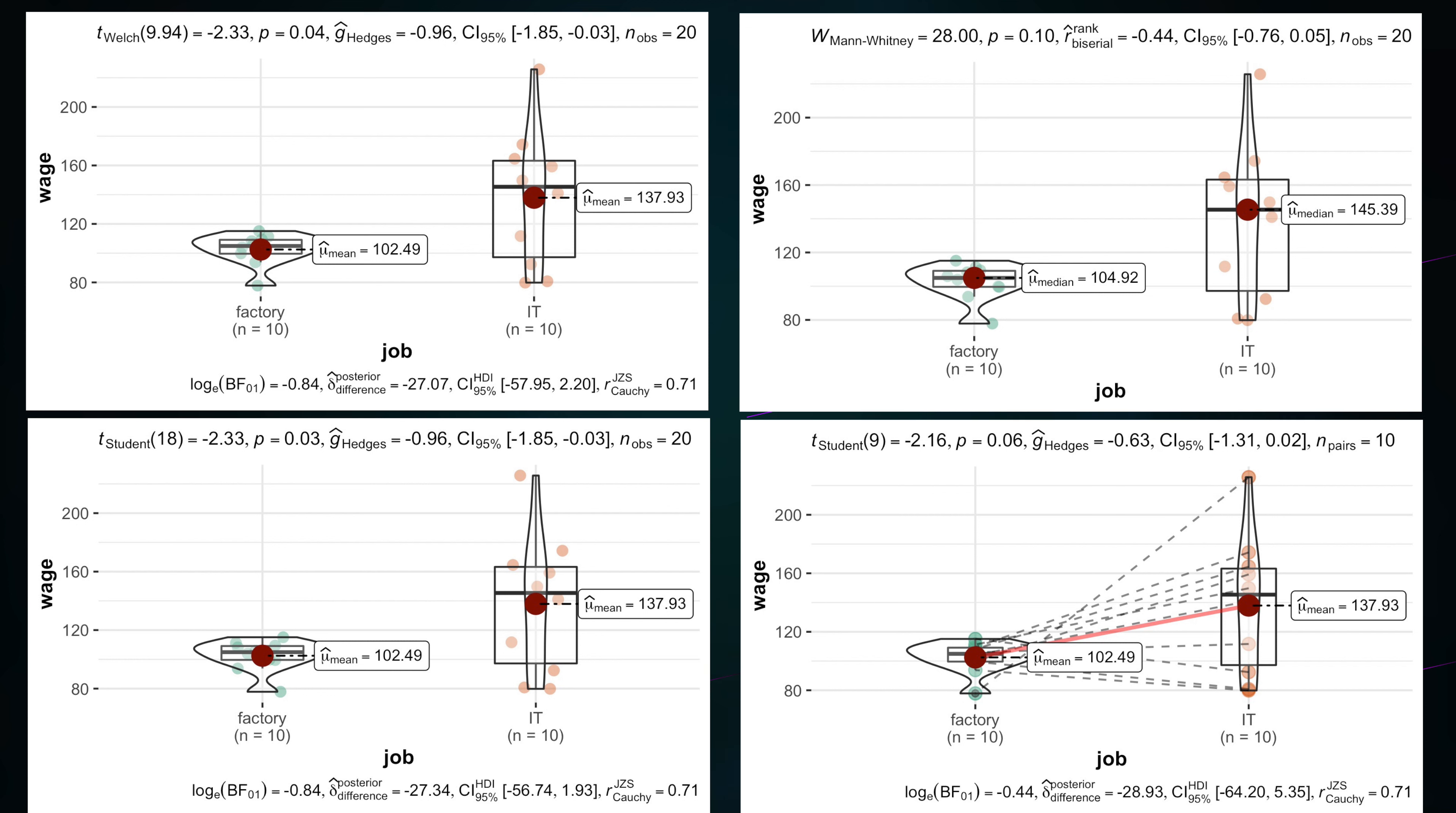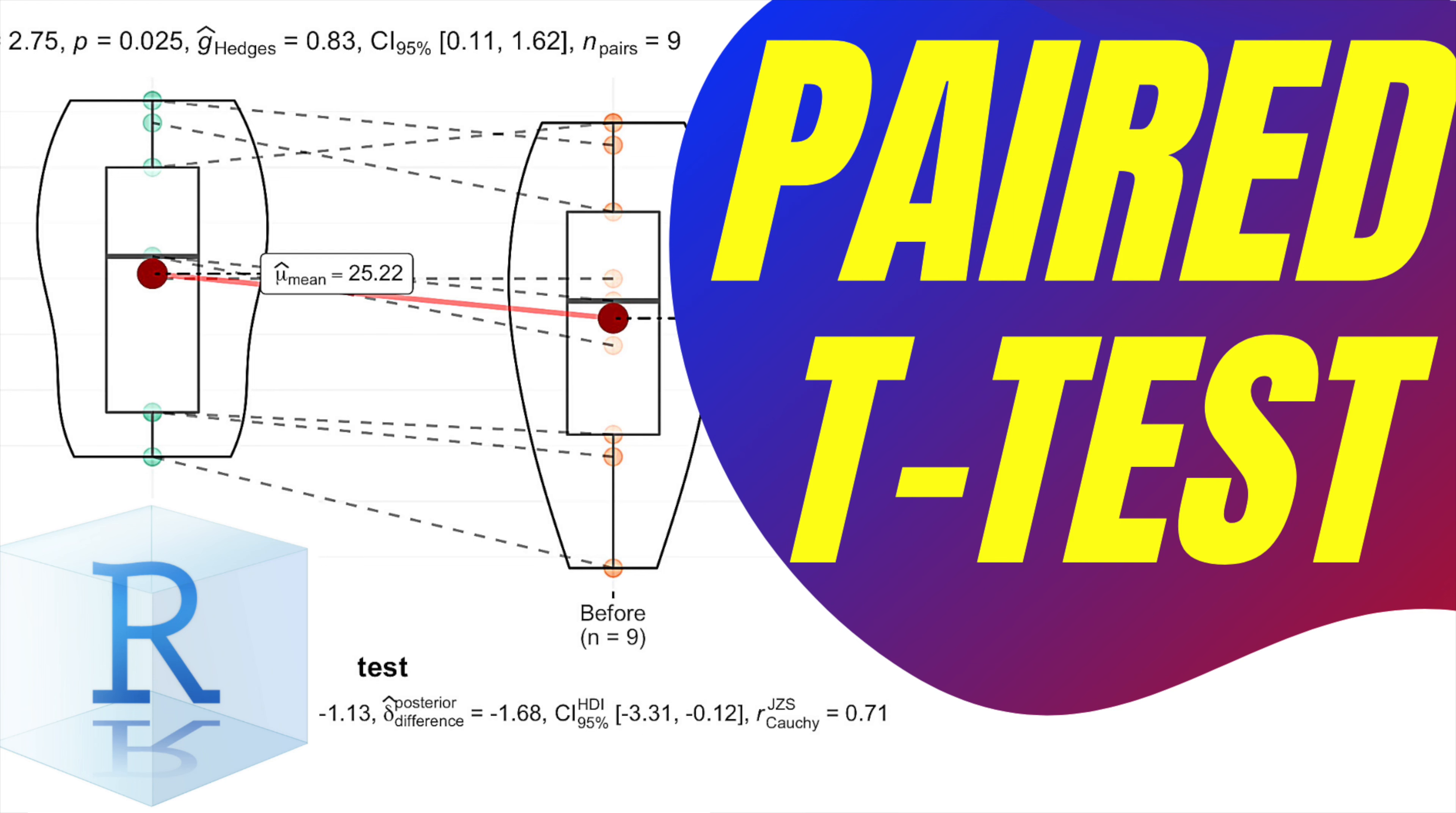This is not the case in our example, but could be our next experiment. Then, paired t-test would be absolutely correct, and if you want to understand it really well, check out this video.